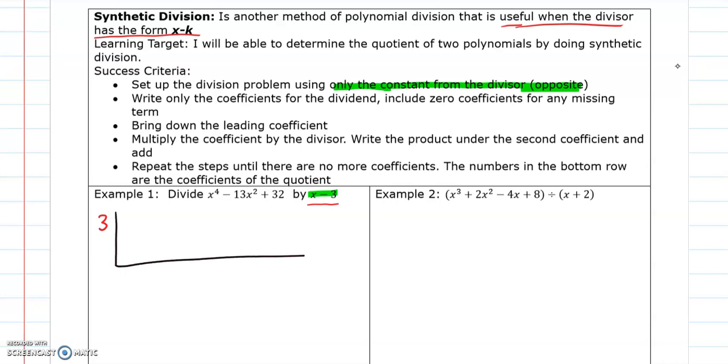Then I'm going to draw this long L. And then second step says write only the coefficients from the dividend, include zero coefficients for any missing terms. So this part, x to the fourth minus 13x squared plus 32, that is your dividend. So we're going to get the coefficients. So the coefficient of x to the fourth is 1.